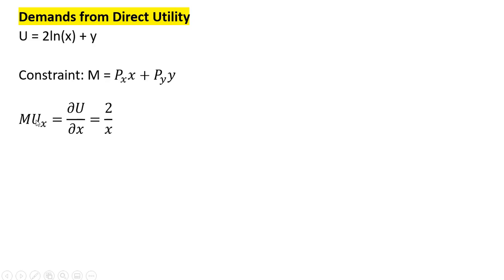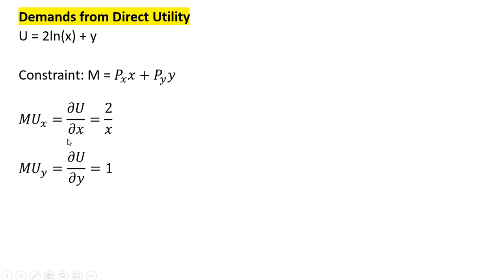First, we'll get the marginal utility of good x by taking the partial derivative of the utility function with respect to x. The derivative of 2 times the natural log of x is just 2 over x, and the marginal utility of good y is just 1.